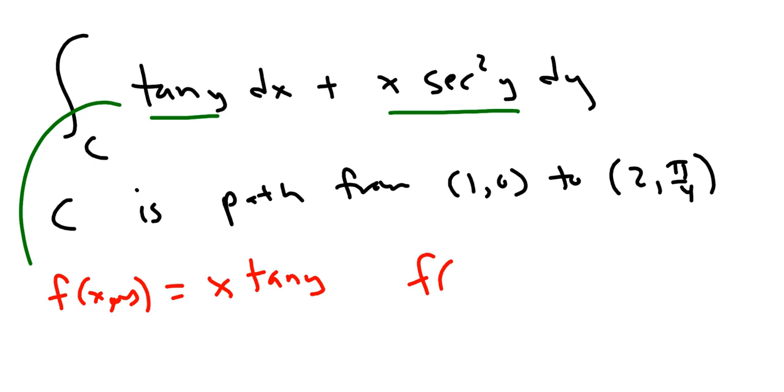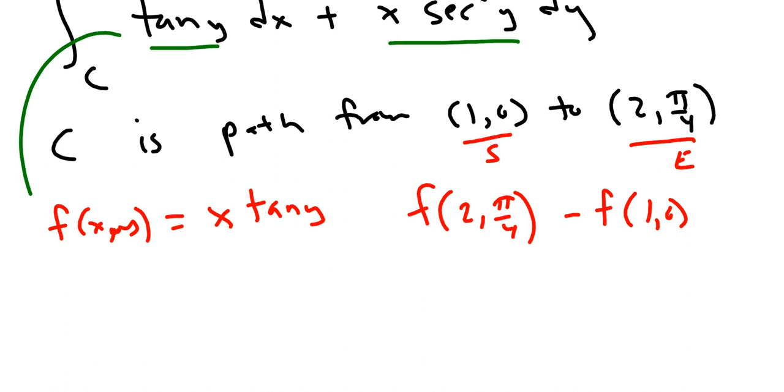So we're ending here, and we're starting here. So you do f(2, π/4) minus f(1,0). Let's do that.